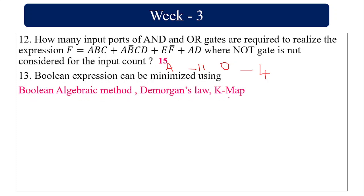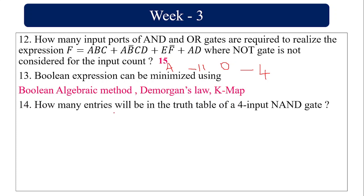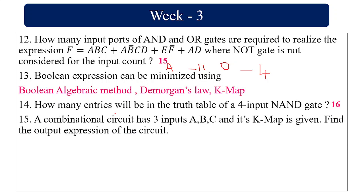A Boolean expression can be minimized using Boolean algebraic methods, De Morgan's law, or K-maps — all three can be used. For a 4-input NAND gate truth table, the number of entries is 2^n = 2^4 = 16, corresponding to rows 0 to 15.